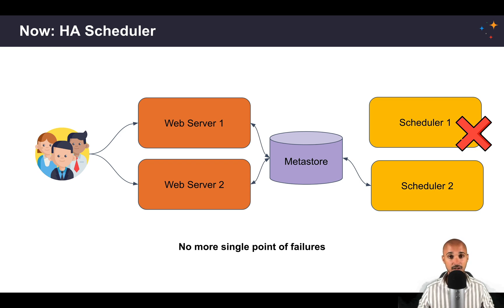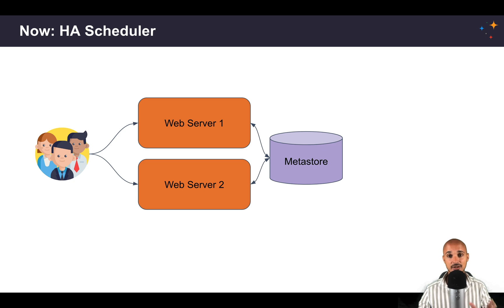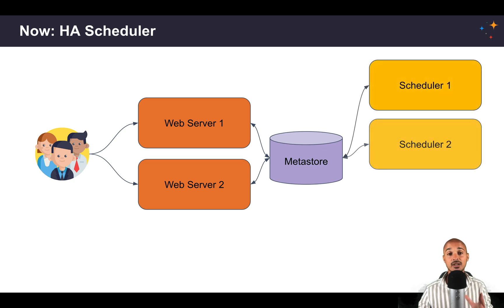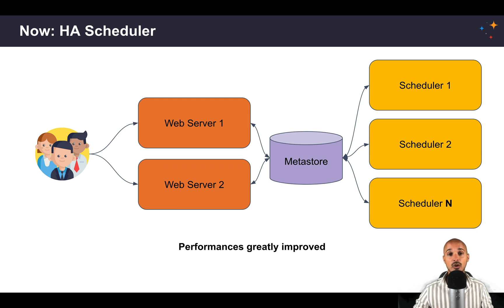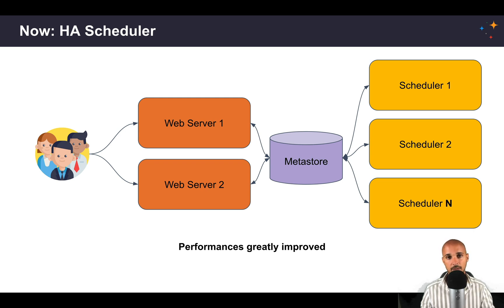The fact that the scheduler is highly available brings so many benefits. The first one is scalability: since you can run as many schedulers as you want, in theory you can run as many tasks as you want as well. Also, the latency between the execution of your tasks has been dramatically reduced. As you will see, running your tasks in Airflow 2.0 is blazingly fast. This is really important if you have use cases where you need to run your data pipelines every minute — in that case, Airflow 2.0 is just a requirement.